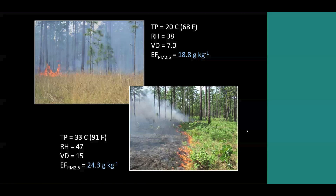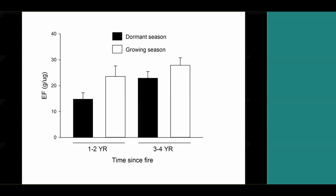Another example shows the difference between time of year: earlier season or dormant season burns had a lower emission factor of 18.8 grams per kilogram, compared to growing season burns at 24.3 grams per kilogram. Looking at time since fire alongside season, the lowest emissions were in annual fires during the dormant season, while the highest emission factors were in three to four year fires during the growing season. These differences, if extrapolated over a landscape, could have a pretty big effect on an emissions inventory.